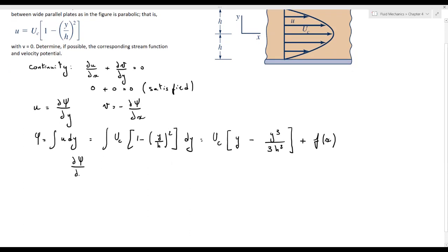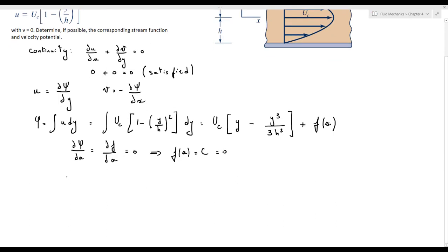If we partially differentiate with respect to x the stream function psi, we will obtain del psi over del x is equal to del f over del x, and it is equal to v. So del psi over del x is equal to v, which is equal to 0. Then the function f of x is a constant, and we can take this constant to be any constant, but here we will take it equal to 0.